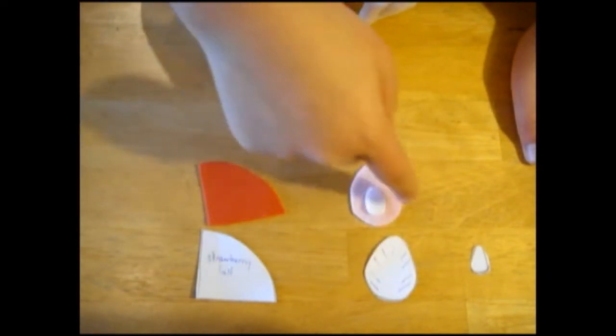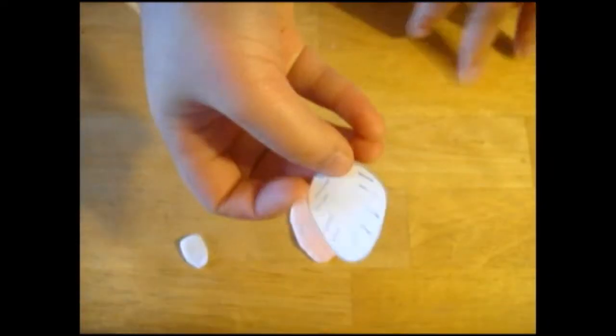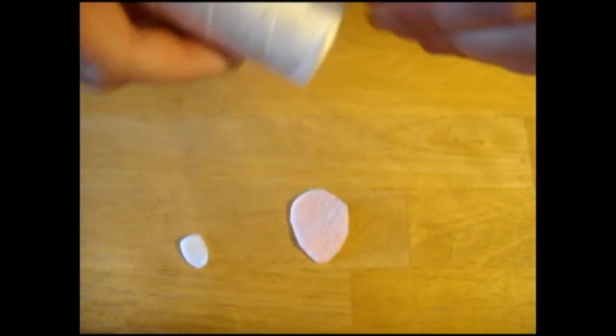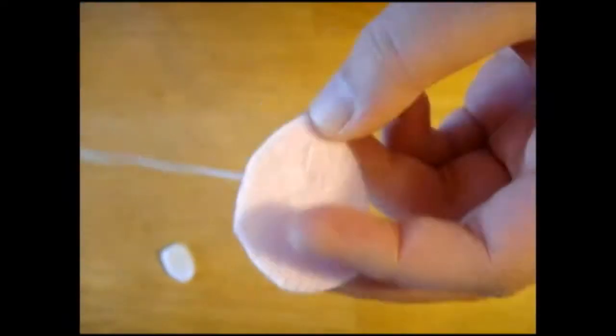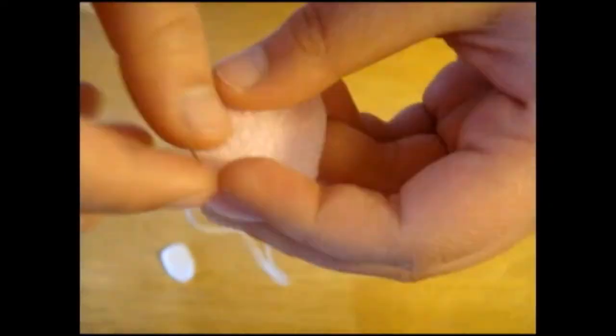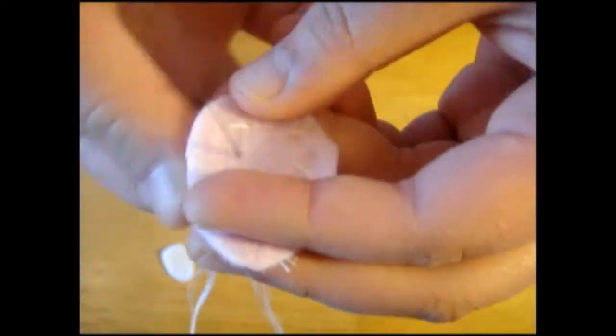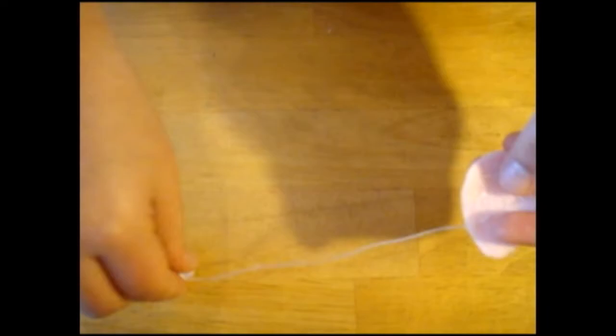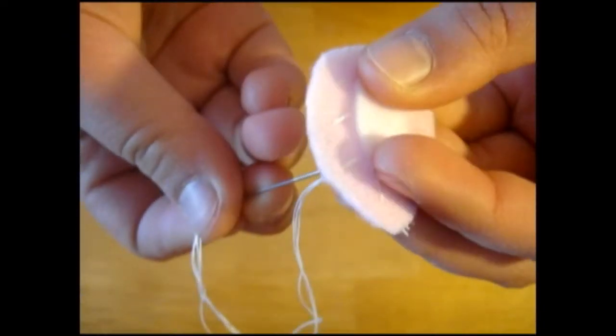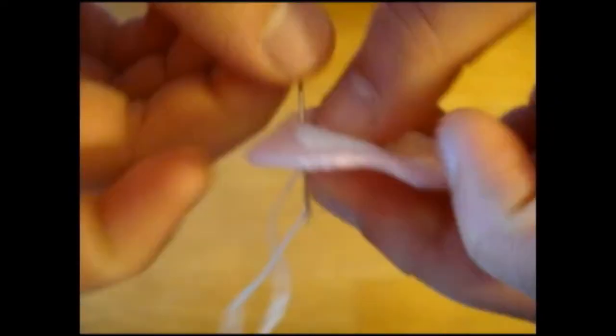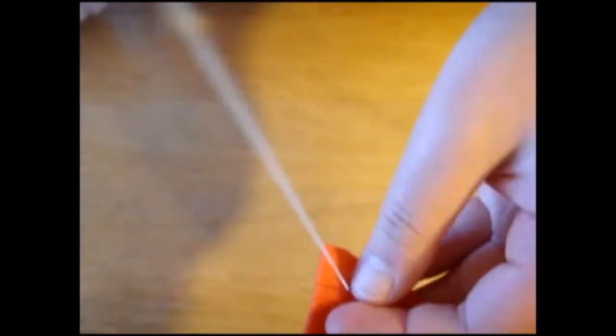The inner strawberry section goes on top of the outer. So as you can see, there are little lines on the template, and I'm going to do this using just white thread. And then with the remainder of the thread, I'm going to sew on using an overcast stitch, the little white piece onto the pink piece. Basically, after this, your inner slash outer strawberry piece should look like that.